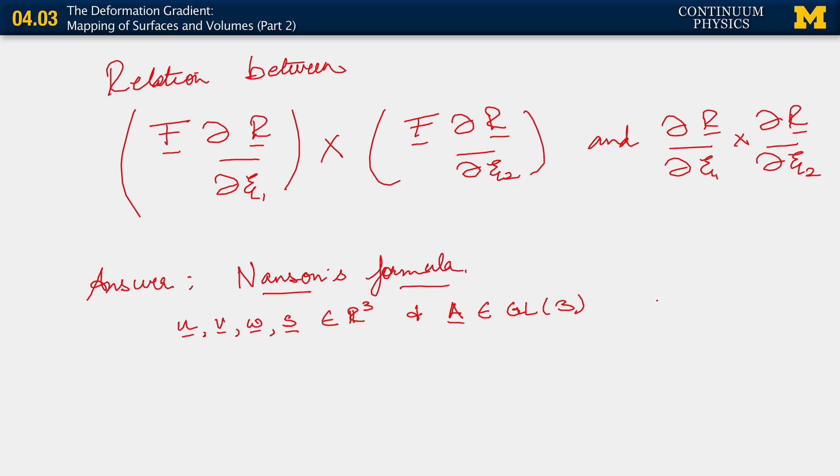Nansen's formula is the following. It says that A U cross A V is determinant of A, A inverse transpose U cross V. That's Nansen's formula.